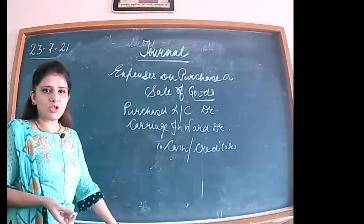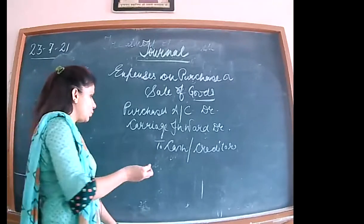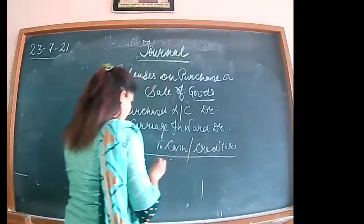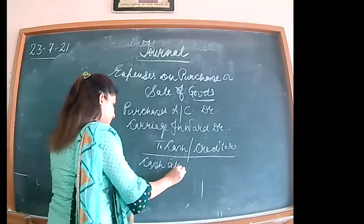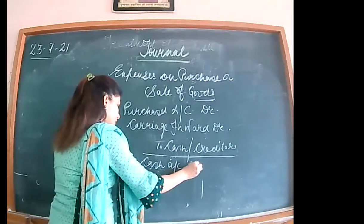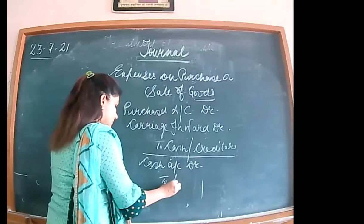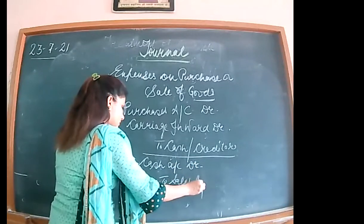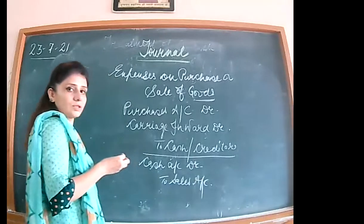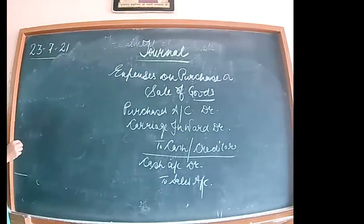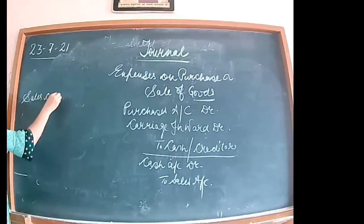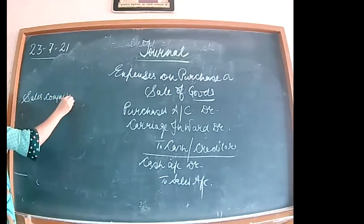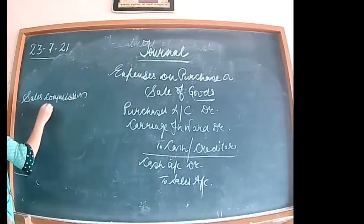In the case of sale of goods, what entry will we pass? Firstly, you are selling the goods — cash account debited to sales account. The second entry is giving commission: sales commission account debited to cash.